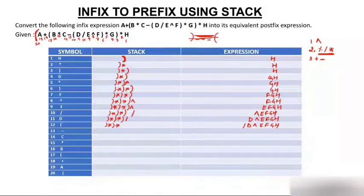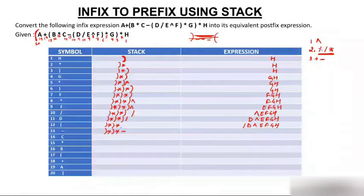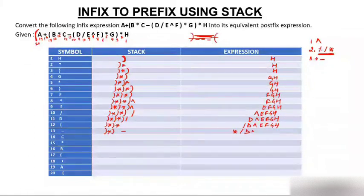Then minus comes. Minus has lower priority than multiply, so multiply cannot be preceded by minus — multiply jumps to the expression. So multiply moves to the expression, and we now have multiply, divide, d, power, e, f, g, h in the expression.